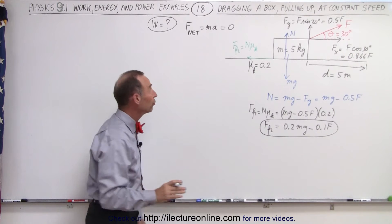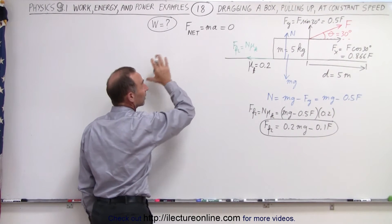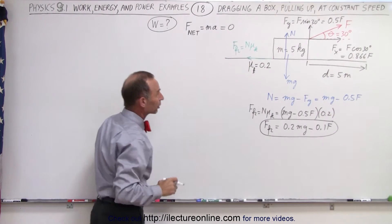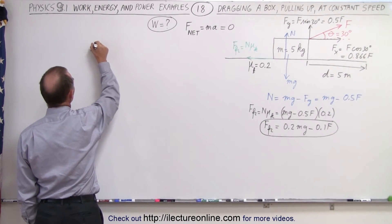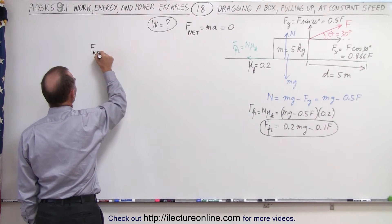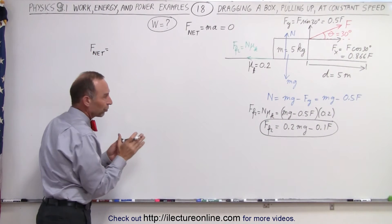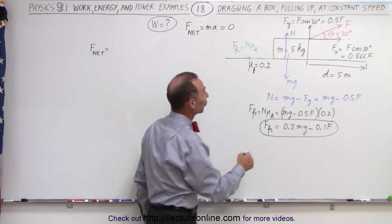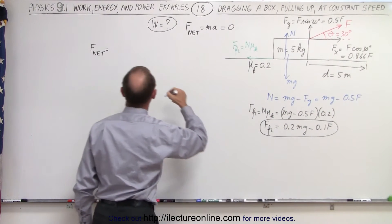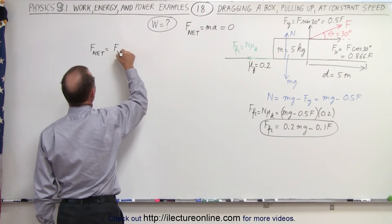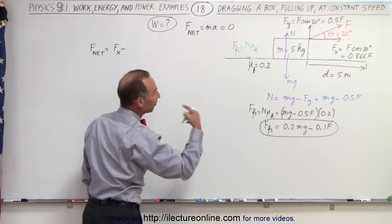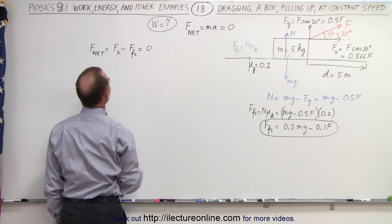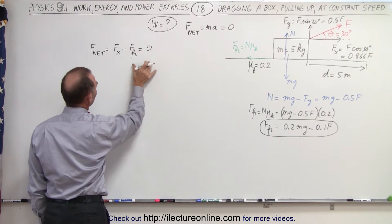Now we're ready to use Newton's second law to come up with an equation that will allow us to find the force and then ultimately find the work done. We can say that F_net is equal to all the forces aiding the motion minus all the forces opposing the motion. So the force aiding the motion would be f_x minus the force opposing the motion, which would be the friction force. We know that that's going to be equal to 0, which means that f_x must equal the friction force.